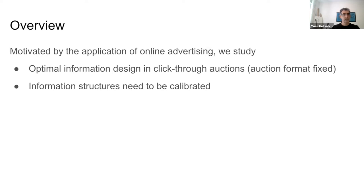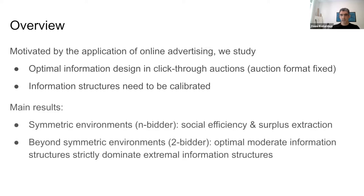In particular, we require all information structures to be calibrated, which basically means that conditioned on receiving the click-through rate prediction being x, the expected click-through rate is exactly x. Under this setup, we show two sets of key results. For symmetric environments, where the joint prior distribution of click-through rates is symmetric for all bidders, we construct a calibrated information structure that can get arbitrarily close to socially efficient allocation and the seller extracts full surplus. Beyond symmetric environments, we show that the optimal moderate information structures always strictly dominate extremal information structures.